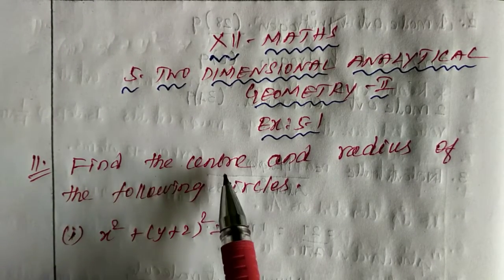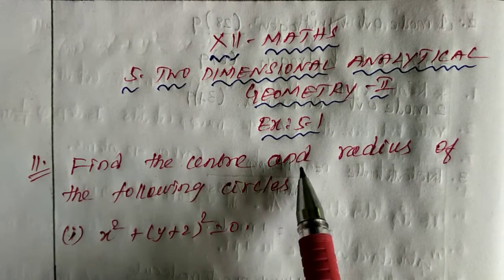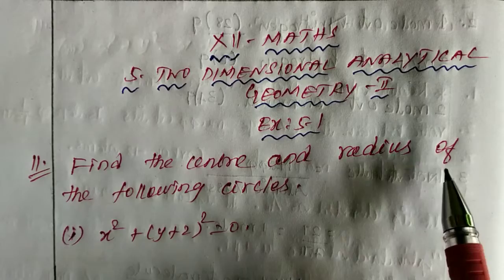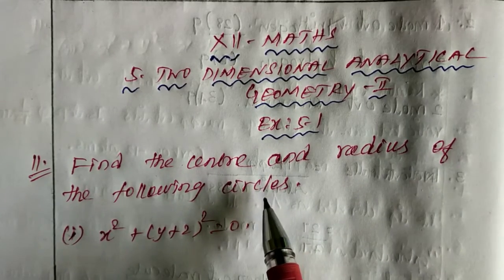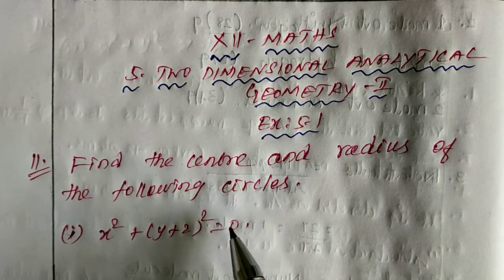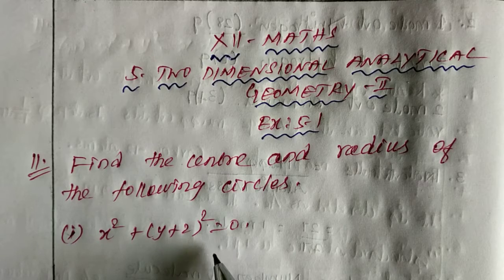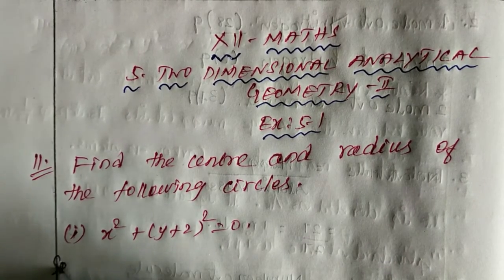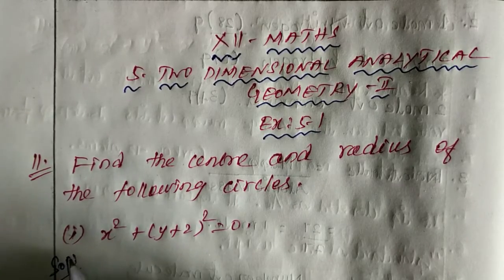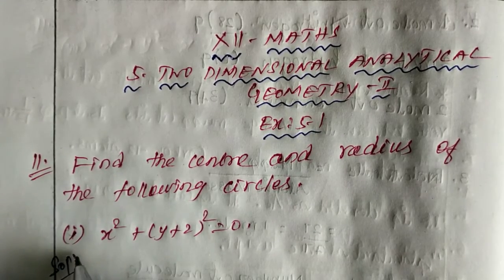Find the center and radius of the following circles. So given circles, find center and radius. Now listen, students. First, 11th question, first subdivision.